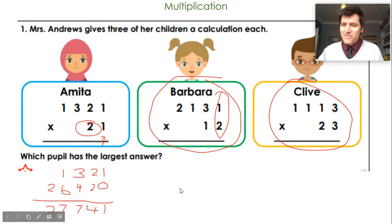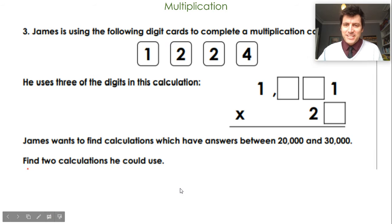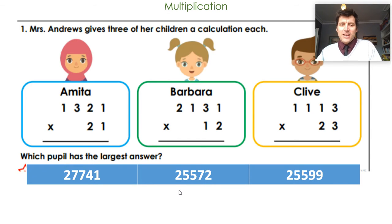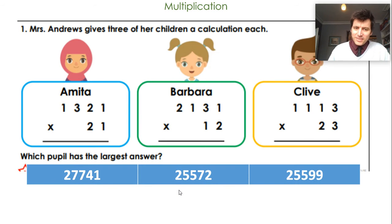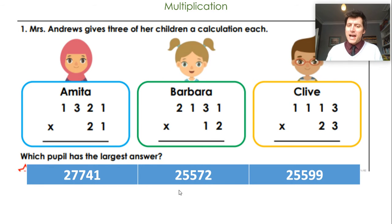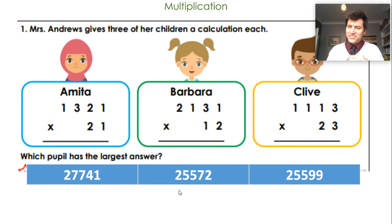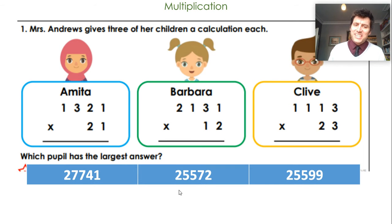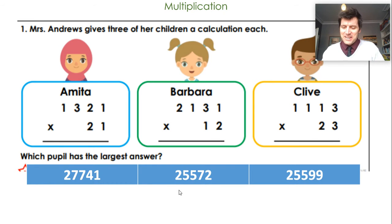Okay, let's see how we got on. Amitra's answer was twenty-seven thousand seven hundred and forty-one. Barbara got twenty-five thousand five hundred and seventy-two. And finally, Clive got twenty-five thousand five hundred and ninety-nine. So you can see the largest answer was Amitra's. Sorry about my presentation, guys!